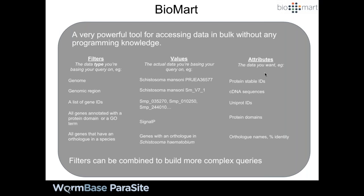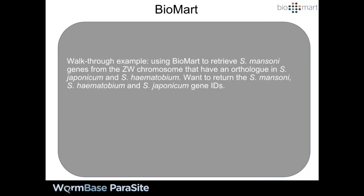In terms of output attributes, pretty much everything Vojtek covered when clicking around the website you can also get out of BioMart: gene IDs, protein IDs, cDNA sequences, protein sequences, gene sequences, external references like UniProt IDs — very handy for converting between WormBase Parasite IDs and IDs from another resource — protein domain attributes, and ortholog names and percentage identity. You can combine filters and attributes to get more complex queries. We'll now do a walkthrough example: retrieving S. mansoni genes from the ZW chromosome that have orthologs in S. japonicum and S. haematobium.